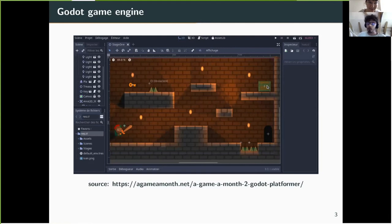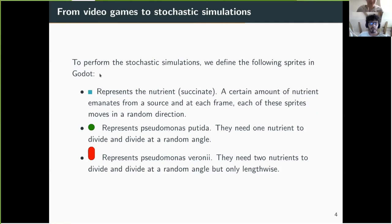In a typical game made with Godot, you define sprites and make them interact. For example, if a sprite touches a key, the key disappears and you add one key to the inventory. We applied the same approach to our biological problem: we defined three sprites — succinate as a small blue pixel, Pseudomonas putida, and Pseudomonas veronii — and made them interact. If a pixel of food touches putida, it disappears and adds one to a food counter. With one nutrient putida can divide, while veronii needs two nutrients to divide.